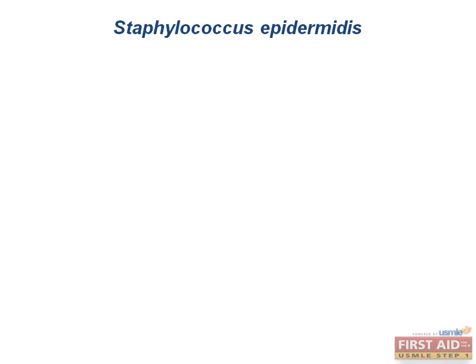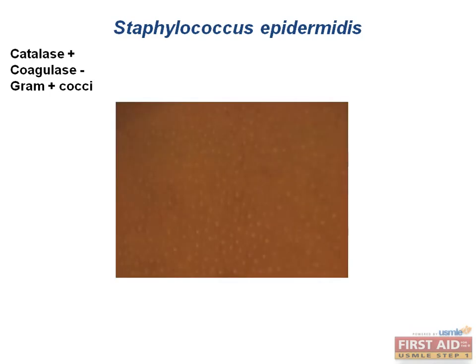Staph epidermidis is our catalase positive, coagulase negative, gram positive cocci. It is normal flora found on your skin and can infect any external devices that penetrate the skin. This is why we swab the skin with alcohol wipes before collecting blood in the hospital — to kill staph epidermidis and prevent contamination. If a blood culture grows staph epidermidis, this does not necessarily mean the patient has staph epidermidis bacteremia; it may just mean skin flora contaminated the blood collection.